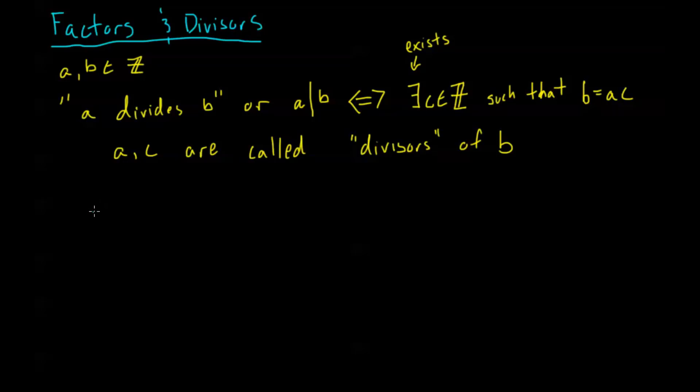Now divisors are not unique. Let's do a little example. For example, 12, I can write 12 as 2 times 2 times 3, or I can write it as 2 times 6, or 4 times 3, or negative 4 times negative 3, right? So on. So we have plus or minus 2, plus or minus 3, plus or minus 4, plus or minus 6, are all divisors of 12.